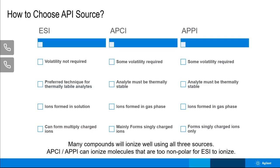ESI easily forms multiply charged compounds or multiply charged ions for very large molecular weights, while APCI is not very efficient at that and can only rarely form multiply charged ions. Some things will ionize well by all three sources, but a main takeaway here is that APCI and APPI can work for things that are too non-polar for ESI to analyze.